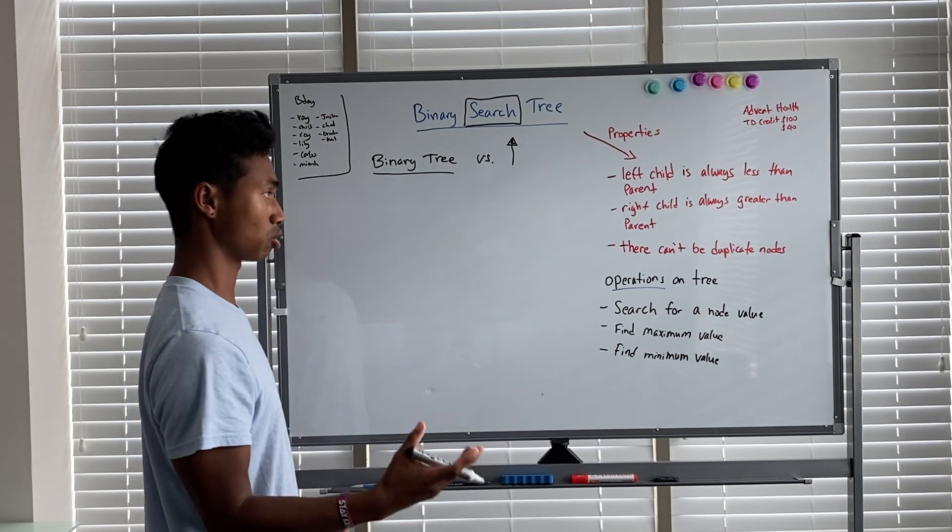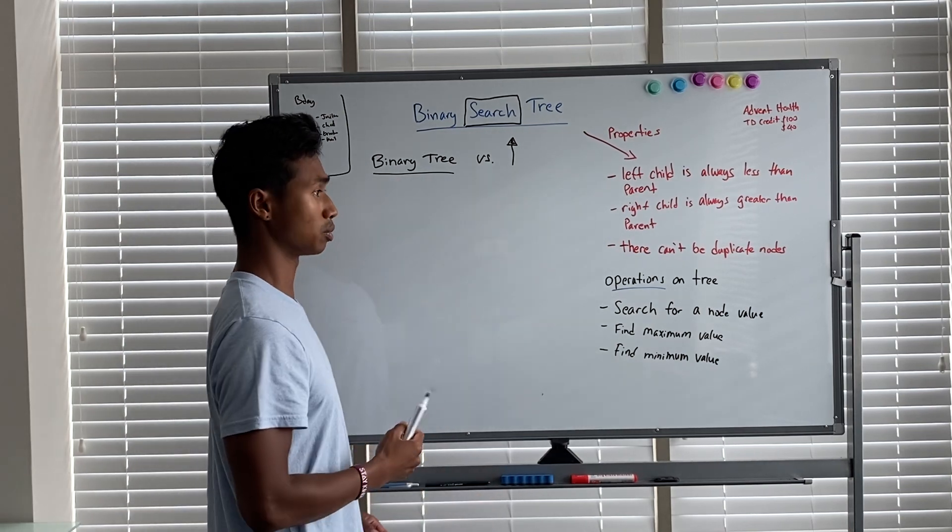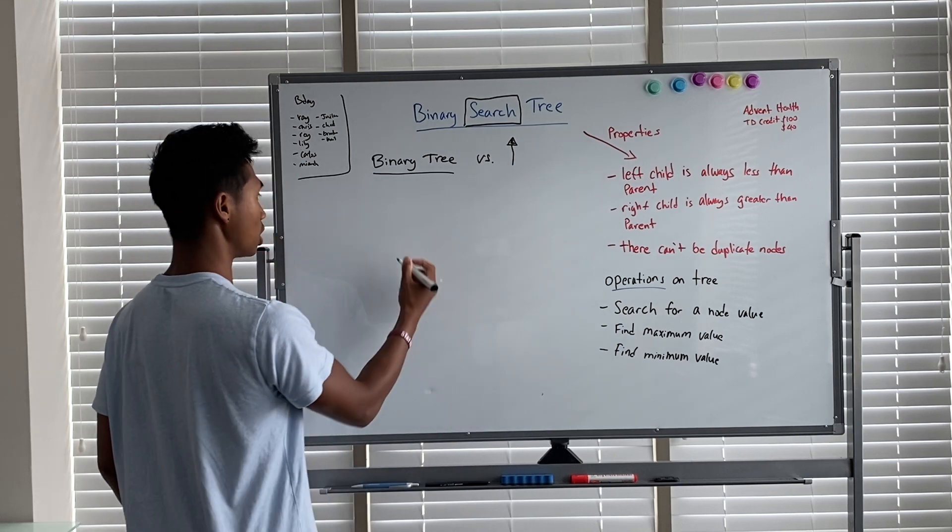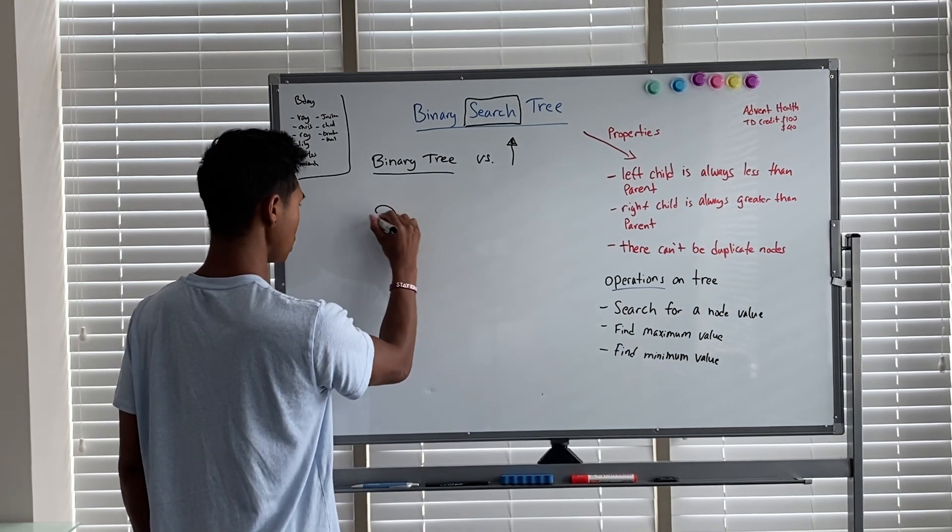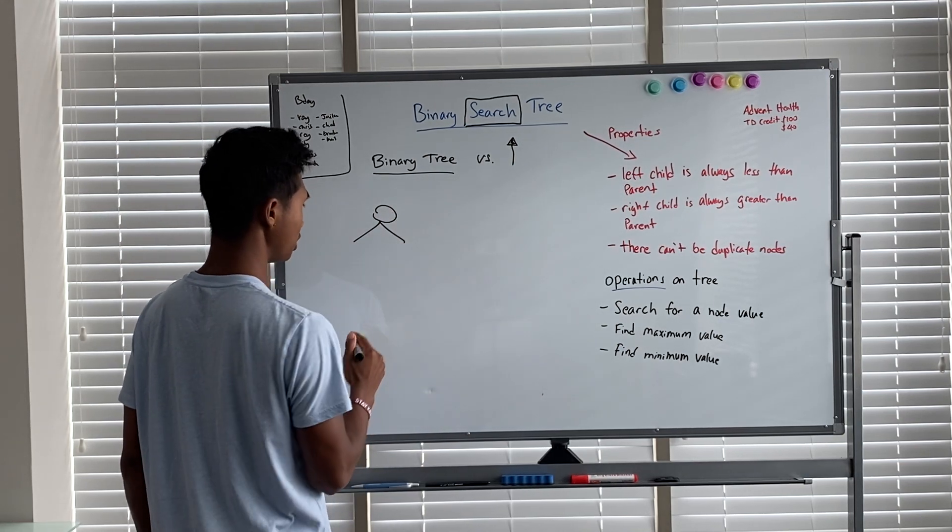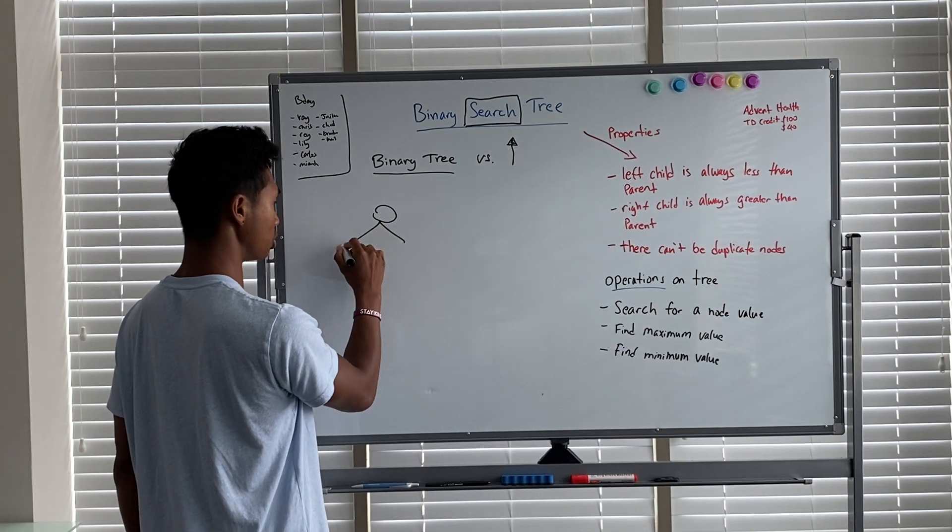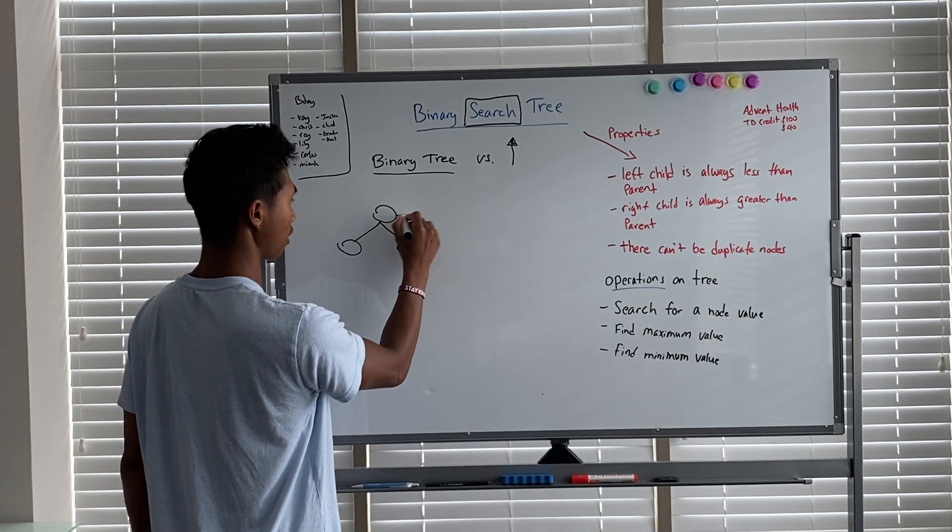Just the way it's structured. A binary tree is more general in terms of you can have a tree as long as it has at most two child nodes. You can't have three or